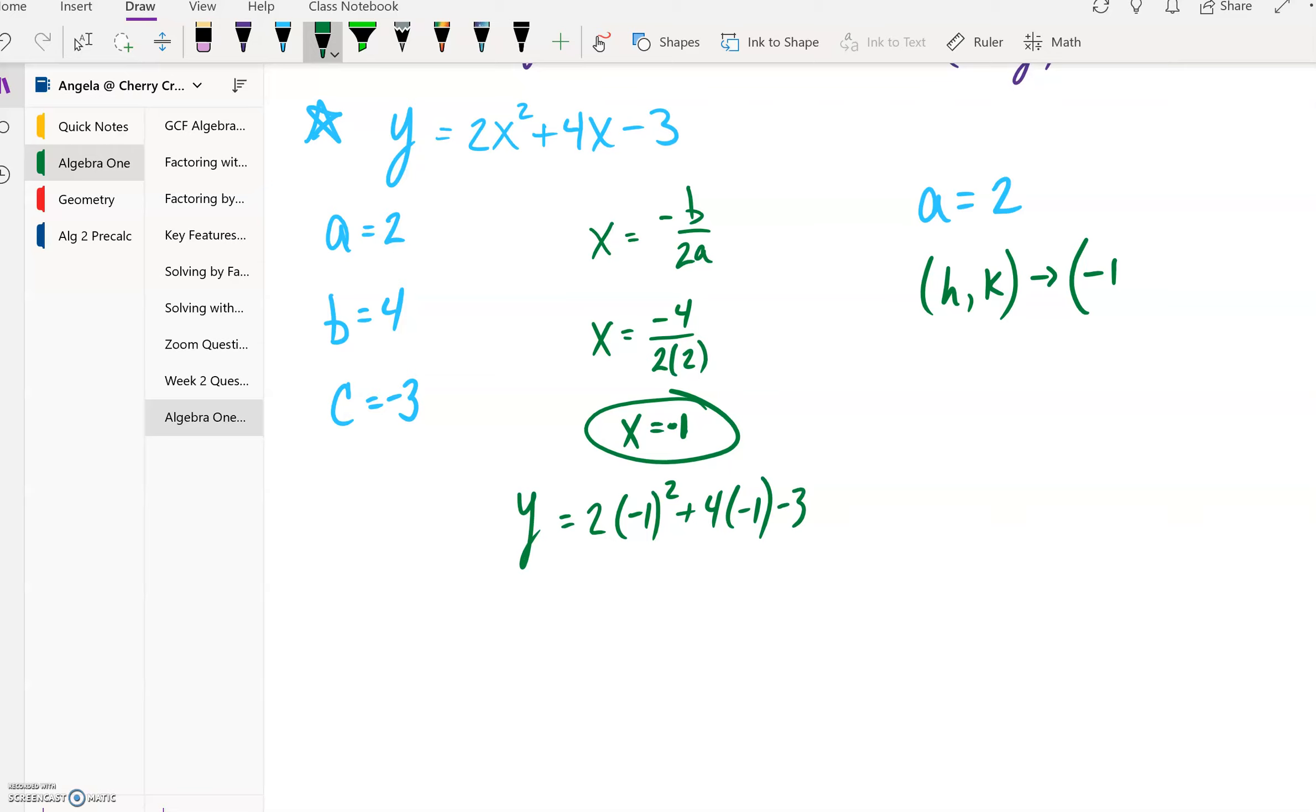So remember when you square that -1, negative 1 squared is going to be a positive 1 times 2. So we're always going to do exponents first and then multiplication, and then our addition subtraction is going to be last. 4 times the -1 is my -4.